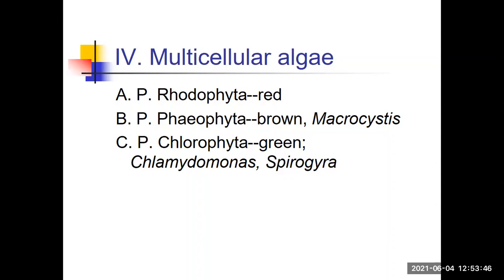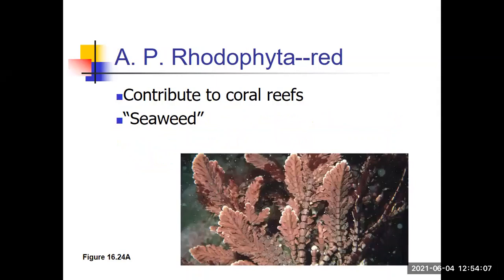The last group here is the multicellular algae. Multicellular algae include the reds — Rhodophyta, the browns — Phaeophyta, and the greens — Chlorophyta — which are both unicellular and multicellular, and by far the biggest group of algae. Some of you have already seen these in the laboratory.